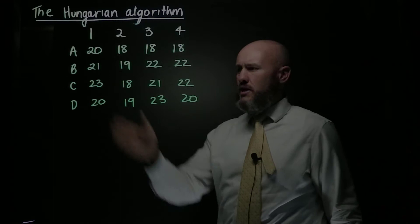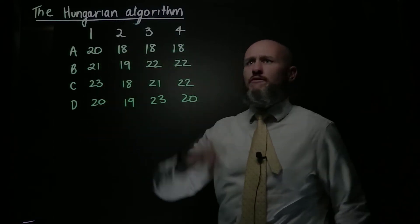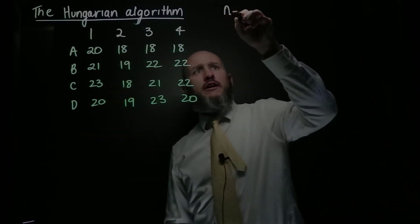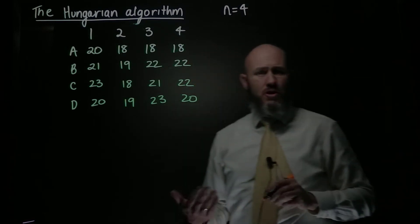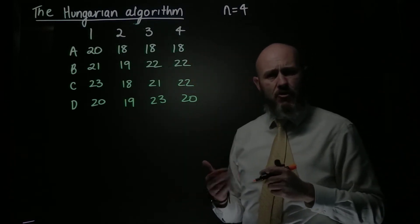This one has absolutely no context, we've got A, B, C, D, 1, 2, 3, 4, which of course means that N equals 4 in our definition from an earlier video where we talked about how to use the Hungarian algorithm.